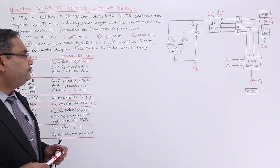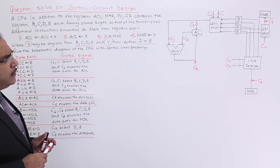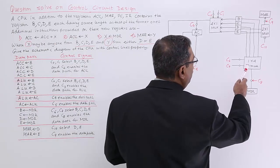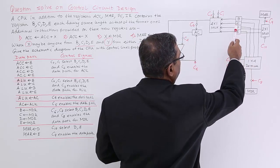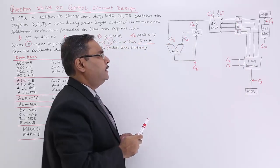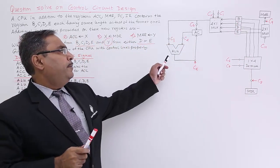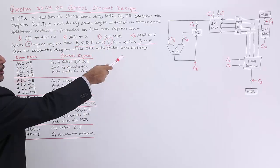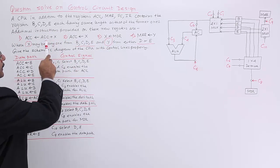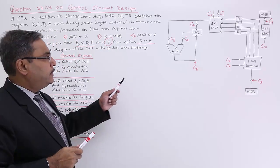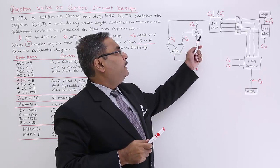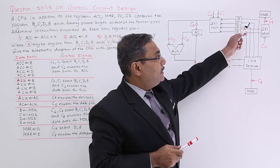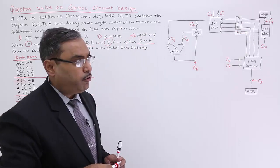How to go for the circuit design? Now here we have MDR, MAR, and BCDE registers. We are having the ALU here, and the BCD and MAR components. The circuit has to be drawn accordingly.